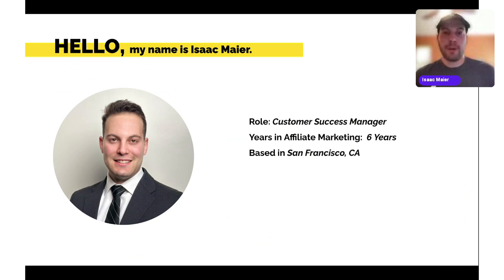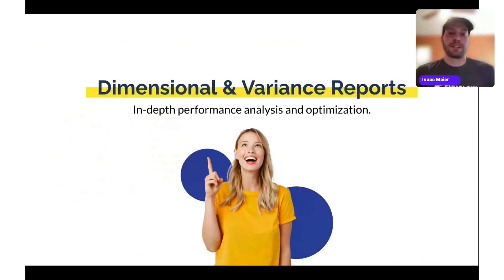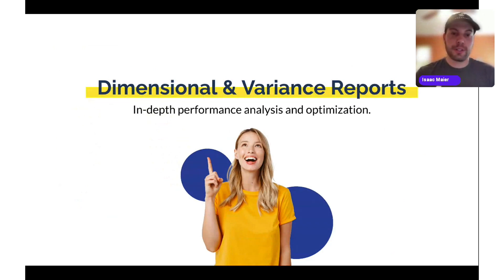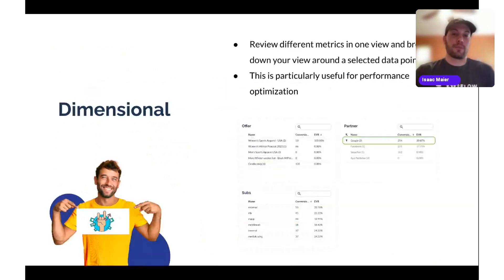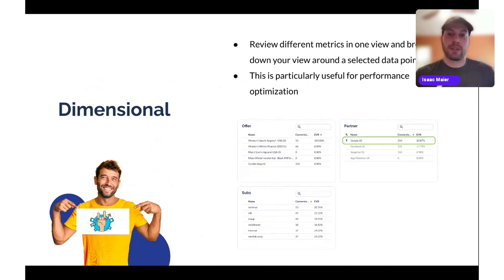Let's jump into why we're really here today — to talk about your dimensional and variance reports. I'm going to show you how to do an in-depth performance analysis and optimization of your affiliate efforts. First, let's get into the dimensional report. This report is fantastic for reviewing different metrics in one view and breaking down your view around a selected data point. It's particularly useful for performance optimization, and I'm going to show you exactly why and how in just a moment.